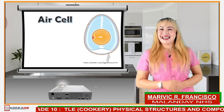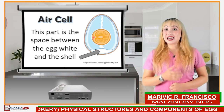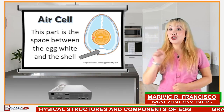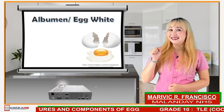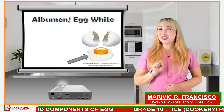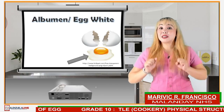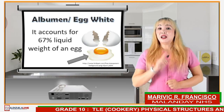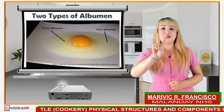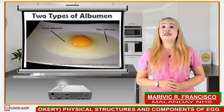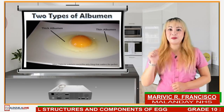Air cell — this part is the space between the egg whites and the egg shell. The albumin refers to the white of an egg. It accounts for 67% of the liquid weight of an egg. There are two types of albumin: the thin albumin and the thick albumin.